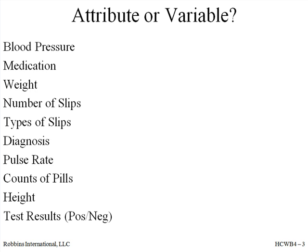Weight — since we measure weight, this is variables data. Number of slips — we count the number of slips, so this is attribute data. Types of slips — the different types of slips are placed into different categories, so attribute here also.